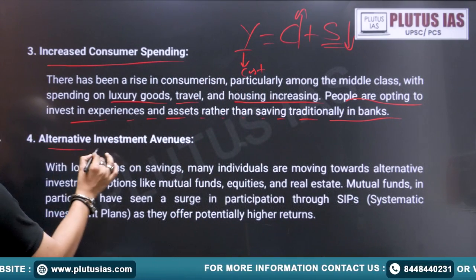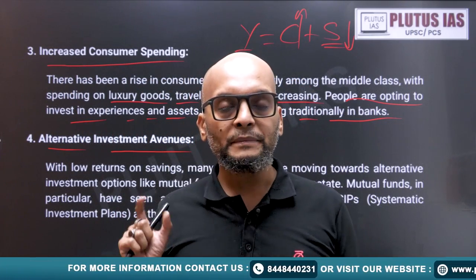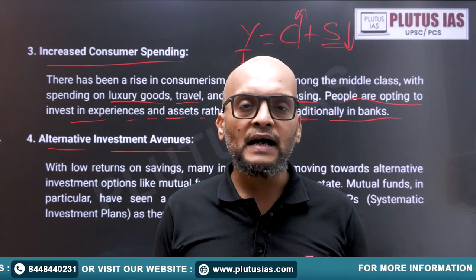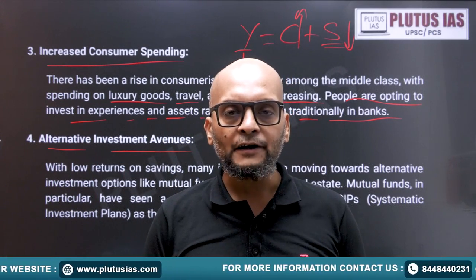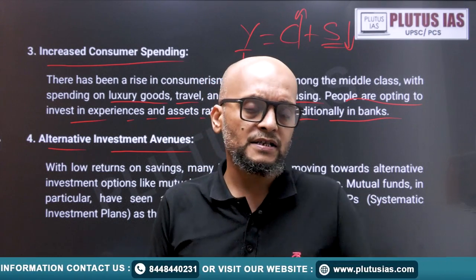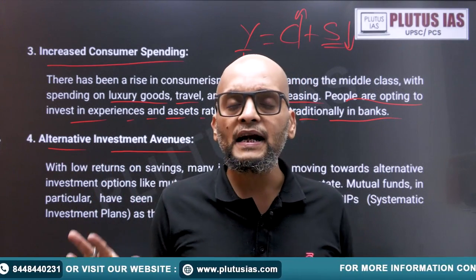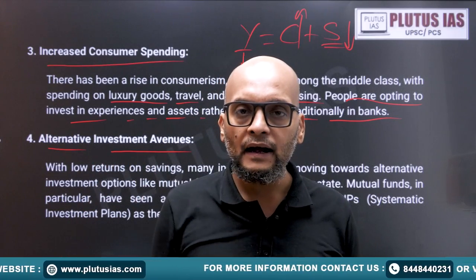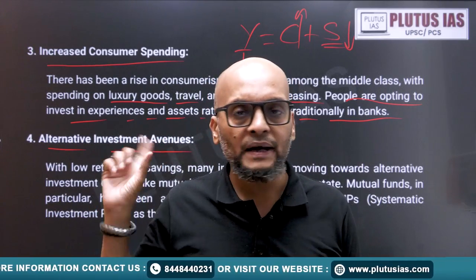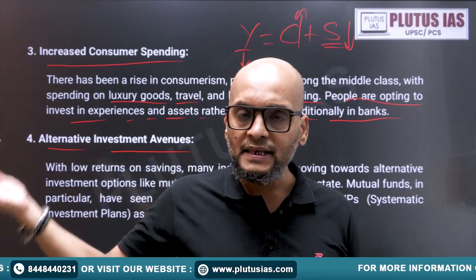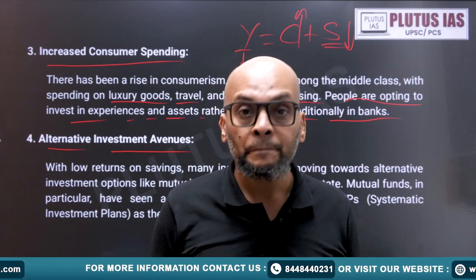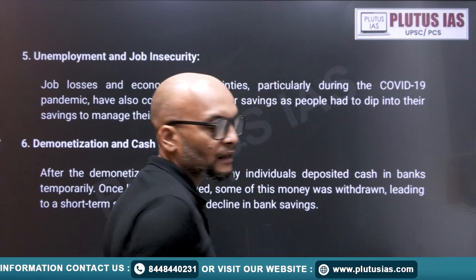Next is alternative investment avenues. In today's information age, people have exposure to many dimensions. People are attracted to mutual funds — for example, a Systematic Investment Plan (SIP) where you invest 5,000 to 10,000 rupees every month. Instead of adding to savings accounts, they are putting money into mutual funds and getting more returns. Savings accounts give interest lower than inflation, while mutual funds are giving 9 to 10% return, beating inflation. So people are being attracted to other investment avenues.